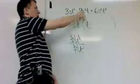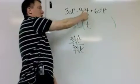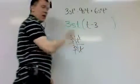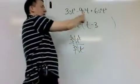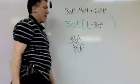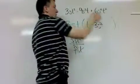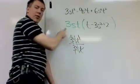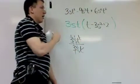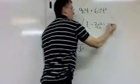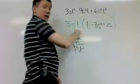If I do it here, negative 9S cubed T over 3ST, I get negative 3 for the number, negative 9 over 3. S cubed over S is S squared. And T over T, that cancels. And then for my last term, plus 2, because 6 over 3 is 2. S squared over S is S. T squared over T is T.